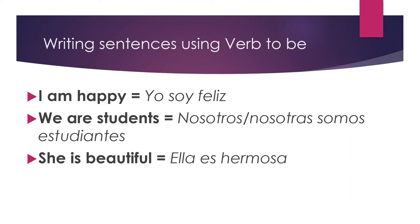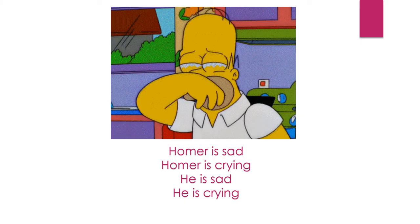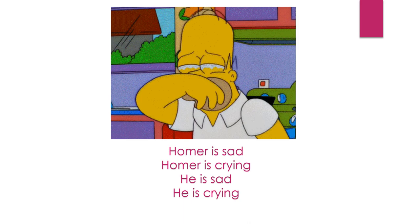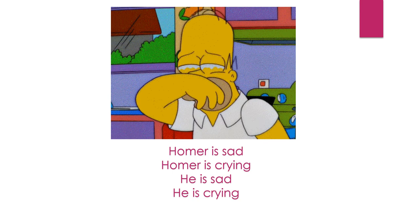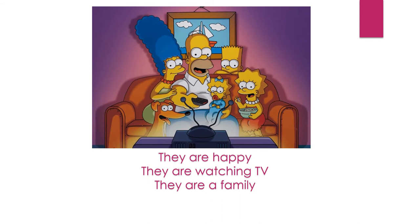Now we are going to see some examples using images and verb to be. Take a look at the first image — we can say 'Homer is sad,' 'Homer is crying,' 'He is sad,' 'He is crying.' We use 'is' because we are using the pronoun 'he.' In another example, take a look at the image: 'They are happy,' 'They are watching TV,' 'They are a family.' We use 'are' because we're using the pronoun 'they.'